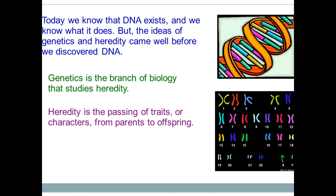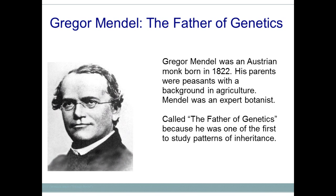What Mendel did to study patterns of inheritance was cross pea plants. He would take a paintbrush, as you see in the picture, and transfer pollen from one flowering pea plant to another. By doing it this way, he knew who the parents were — for example, a purple and a white pea plant. What he was doing was creating monohybrid crosses. Mono means one, hybrid is a cross of different traits, so he was crossing one trait at a time, which enabled him to see the patterns occurring.